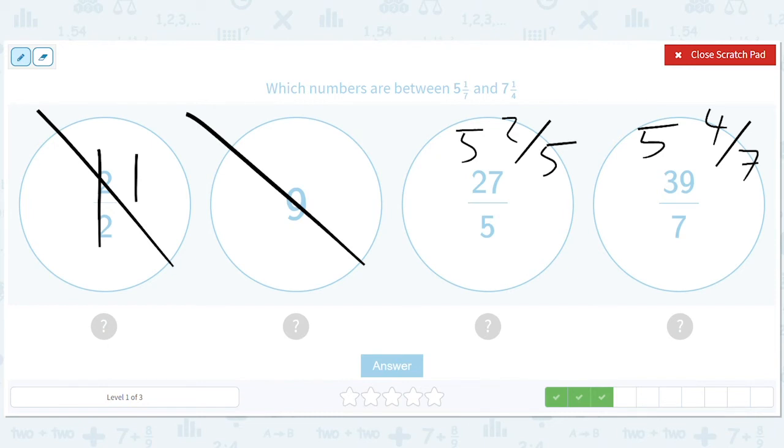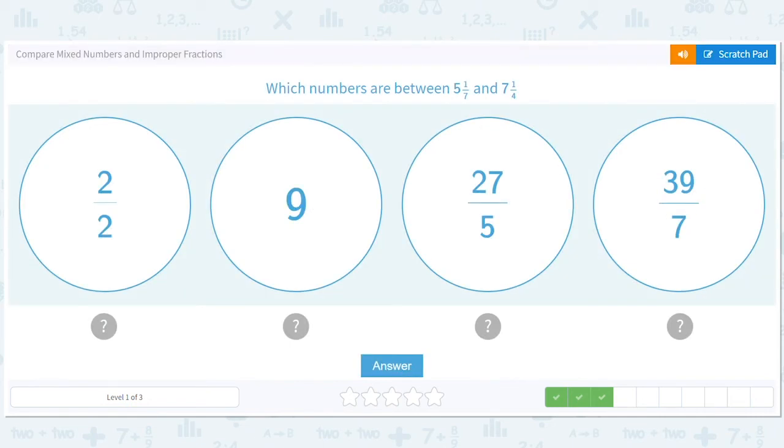I think, I mean, number sense tells us the two-fifths is 40%. That's pretty big, right? That's bigger than one-seventh, right? So this is good. Four-sevenths, that's definitely bigger than one-seventh, right? Because it's four-sevenths, right? So that's good, too. Why does only one of them become blue? It's weird.